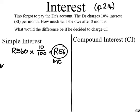In month one, what does she owe? She owes the 560 Rand plus 56 Rand.